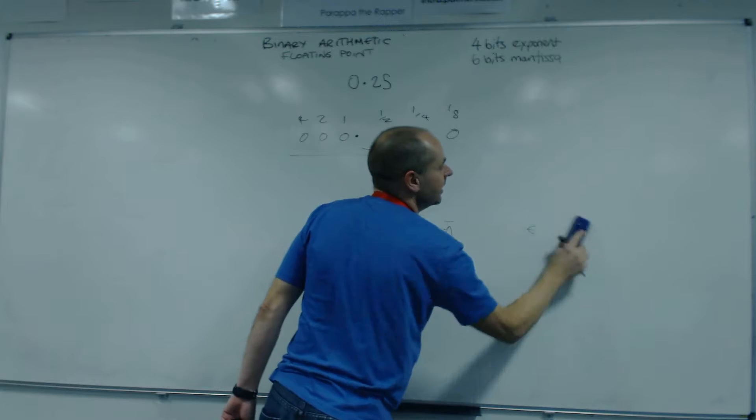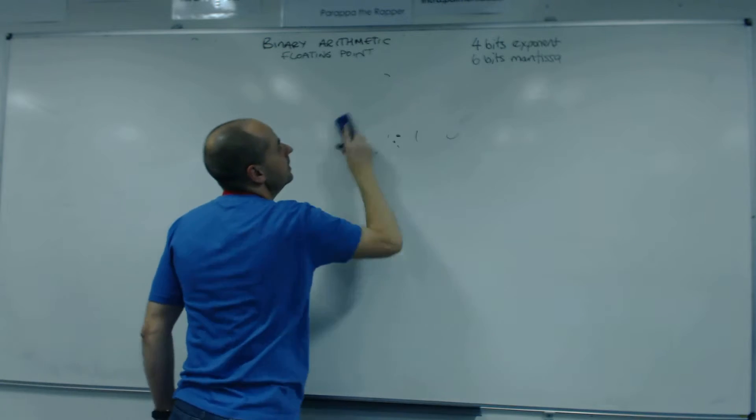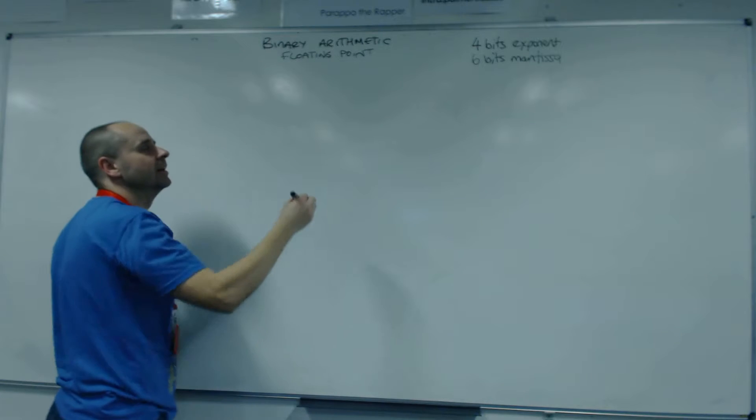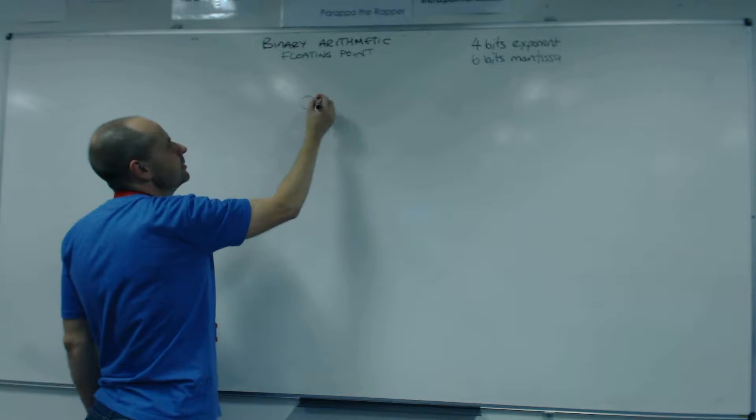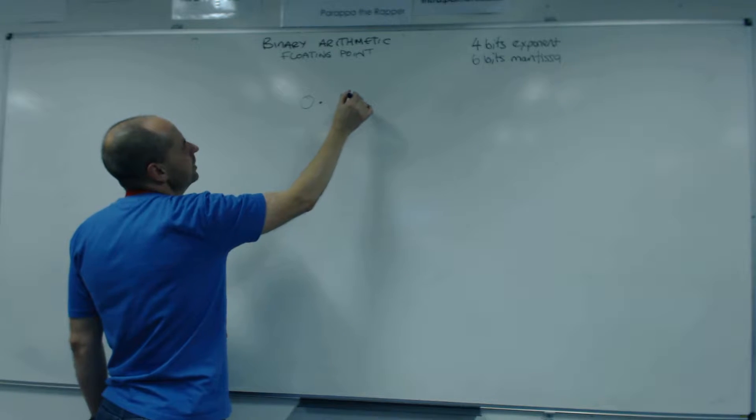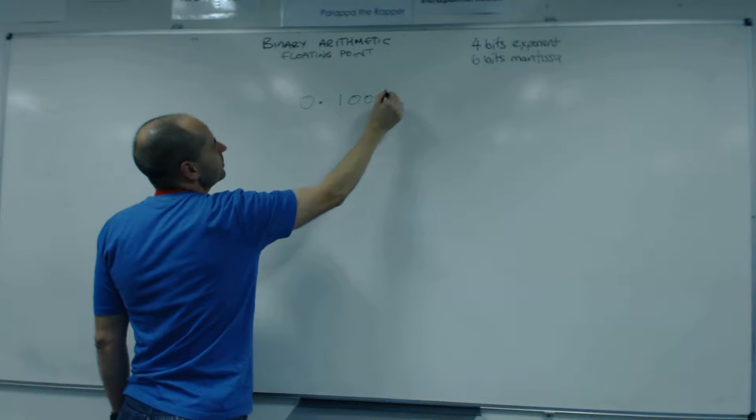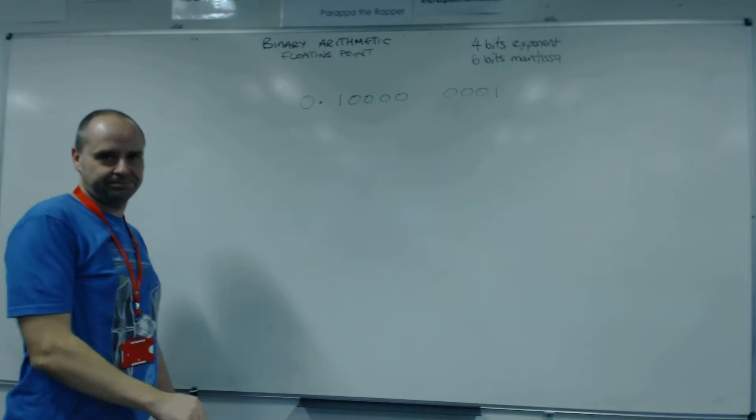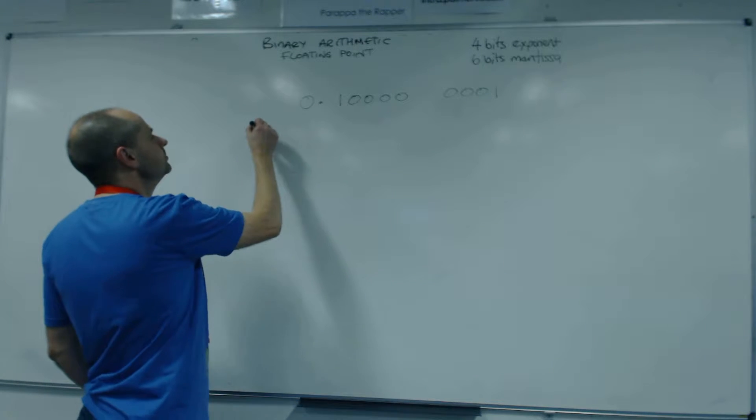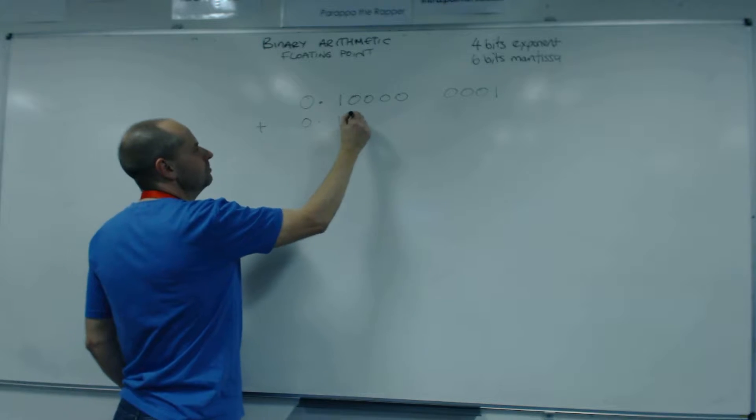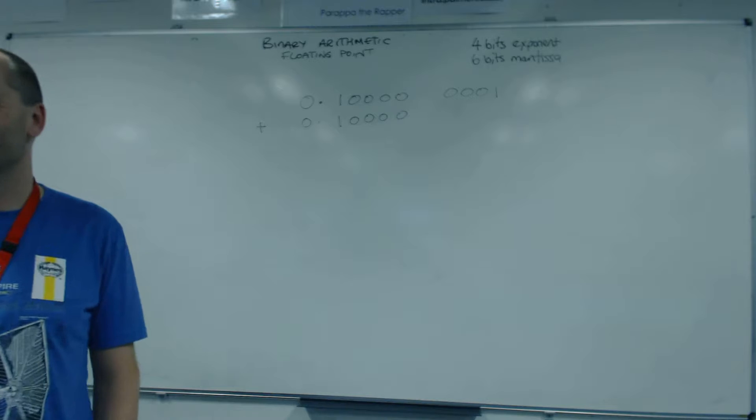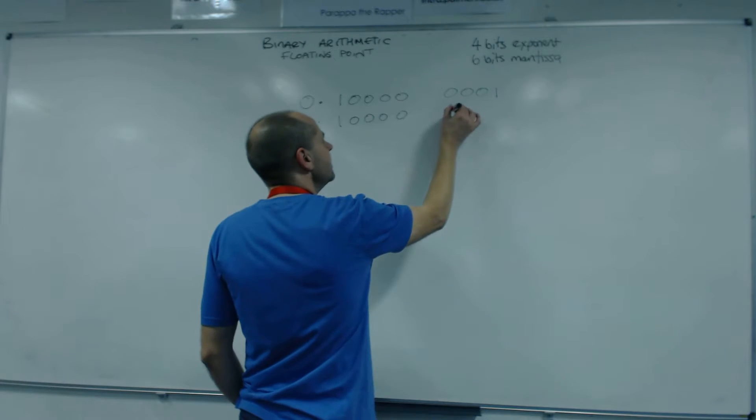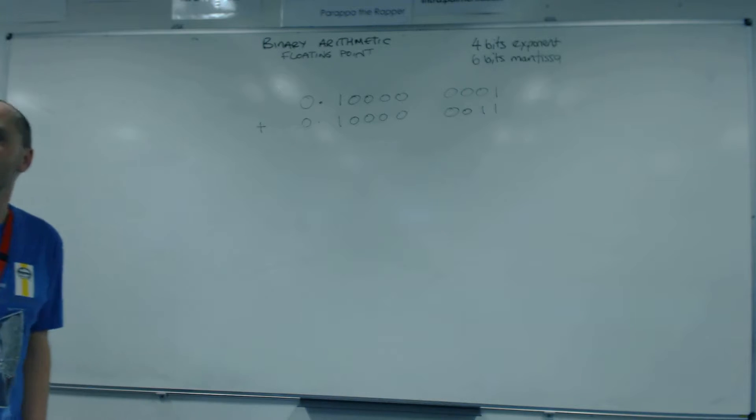So let's have a look at a bit of arithmetic. And the normalising thing comes back into play here. So let's have a look at, we're just going to do positive numbers. It's not going to scare you with negatives. So let's have 0.1. I'll use that format still. So that's four, five, six bits. And we're going to have that.